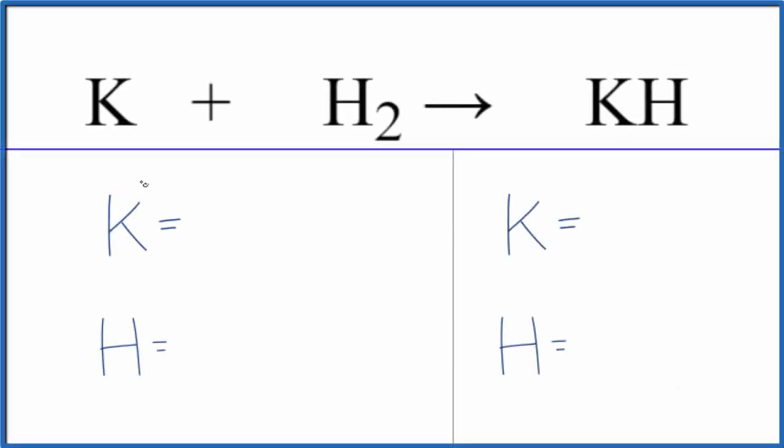In this video, we'll balance the equation for K plus H2 gives us KH. Potassium plus hydrogen gas gives us potassium hydride.